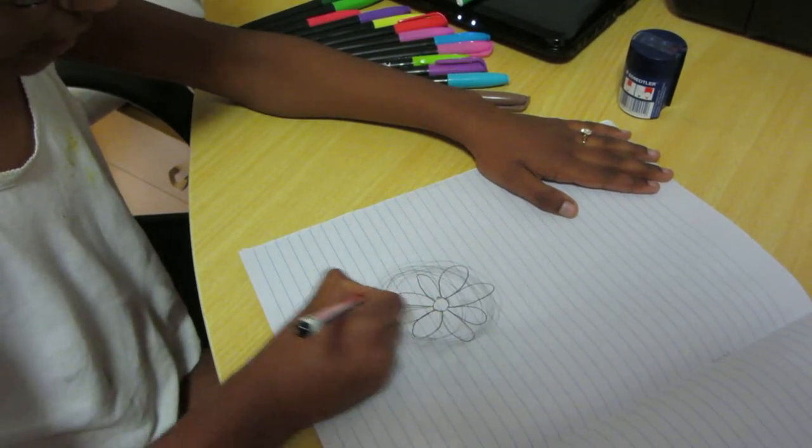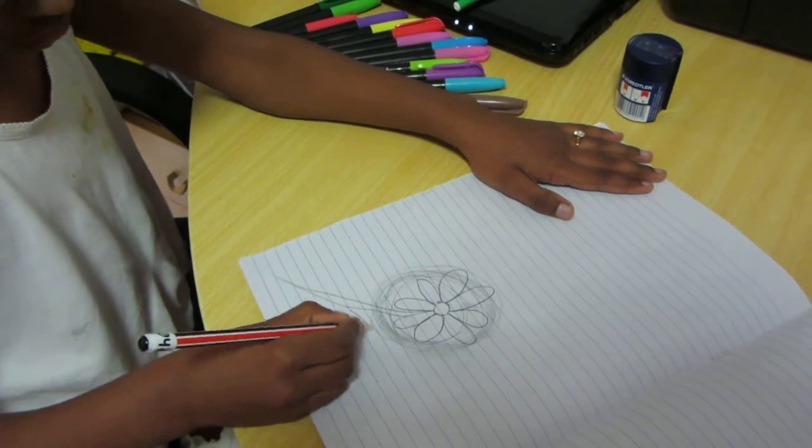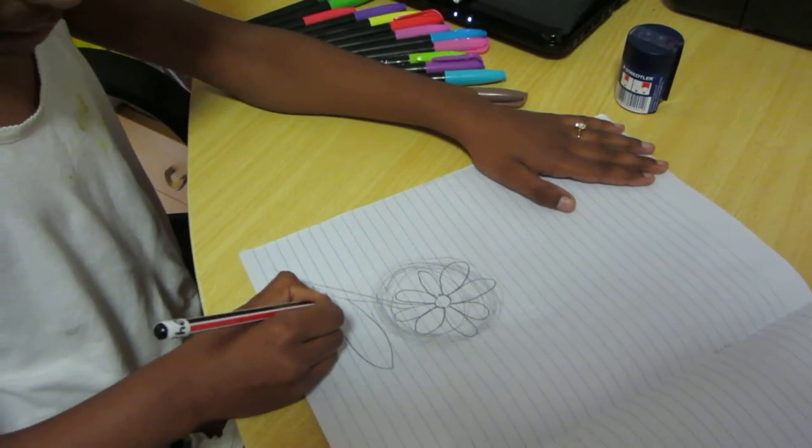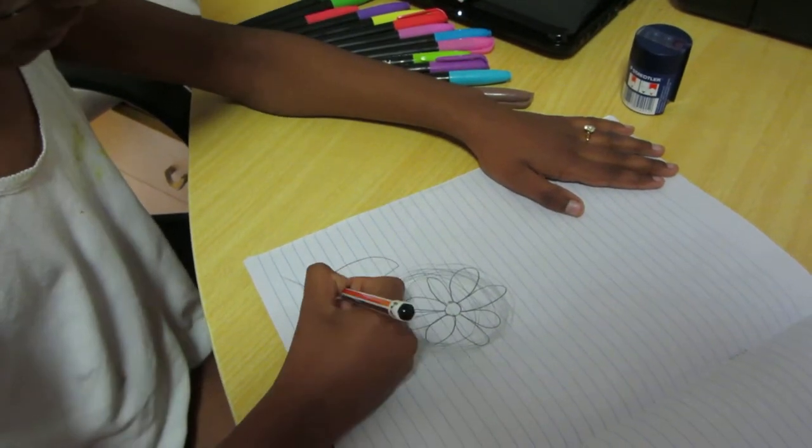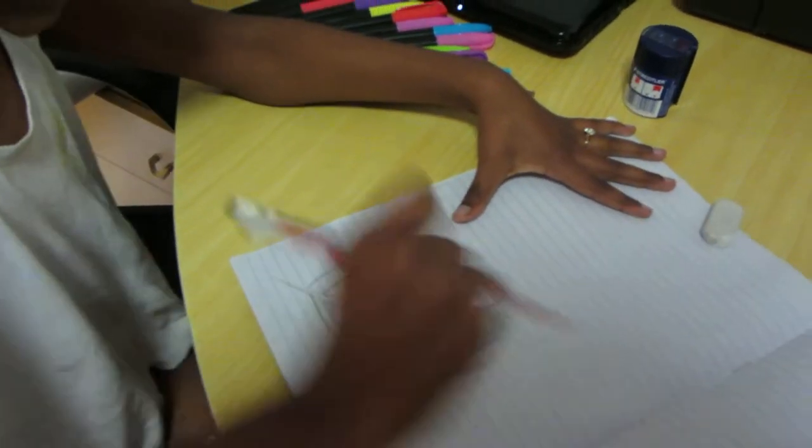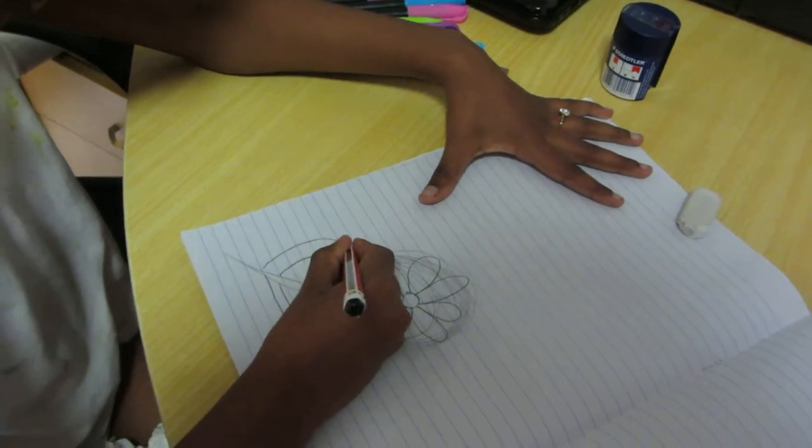Now we're going to draw its stem, just like that. Doesn't have to be big though. And draw leaves like that. If you want, you can do a little caterpillar bite to make it more realistic.